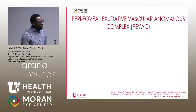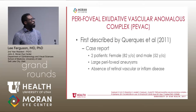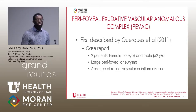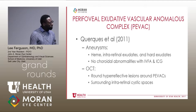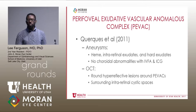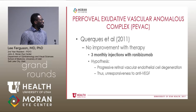This gets into the recent discovery of the perifoveal exudative vascular anomalous complex, or PVAC. It was first discovered by French authors in 2011. Their case report looked at two individuals and noticed these large perifoveal aneurysms not associated with any retinal inflammation or vascular disease. Their initial paper described aneurysms with intra-retinal pathologies but no abnormal choroidal findings. On OCT, they showed a hyper-reflective lesion around the PVAC disease, as well as surrounding intra-retinal cystic edema.